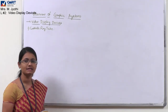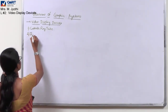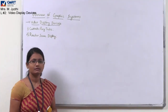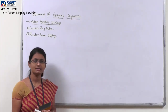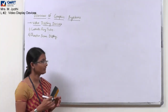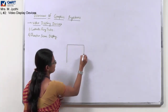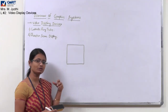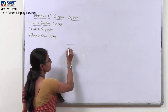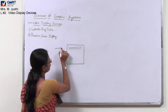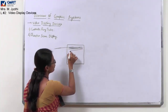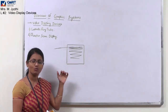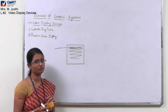The next type of video display device is a raster scan display. The most common type of display monitor employing a CRT is a raster scan display. In this, the electron beam traverses the screen in the form of rows — row by row. As the beam travels row by row, the intensity of each pixel value will be set, sometimes high and sometimes low, depending upon the picture definition.